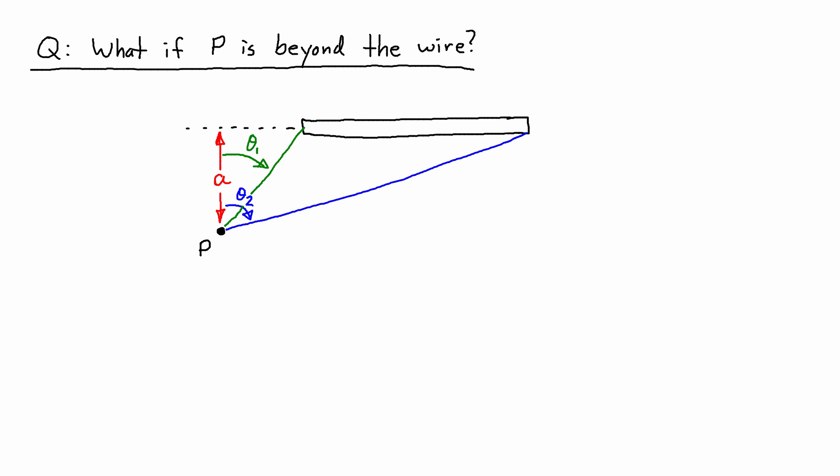This would be theta 1, and I could call this negative theta 1. So if I measured that as 30 degrees, I would actually insert a negative 30 degrees in the equation.